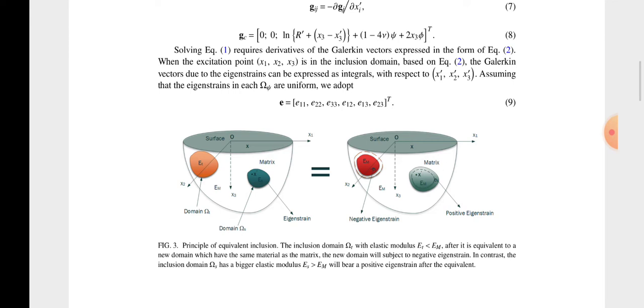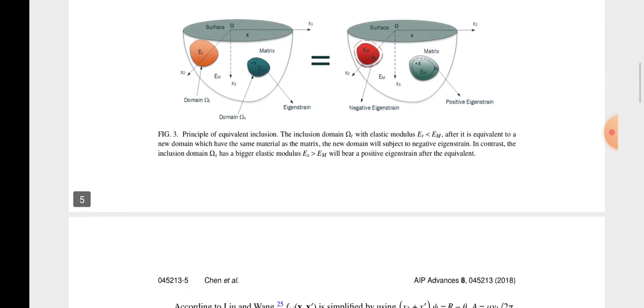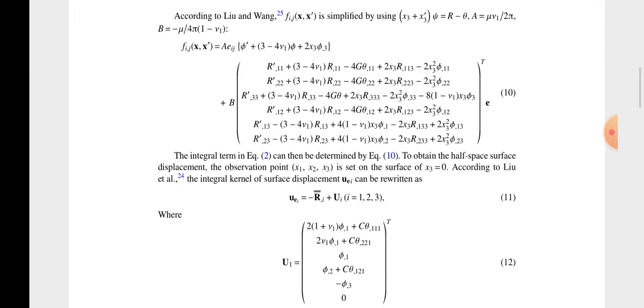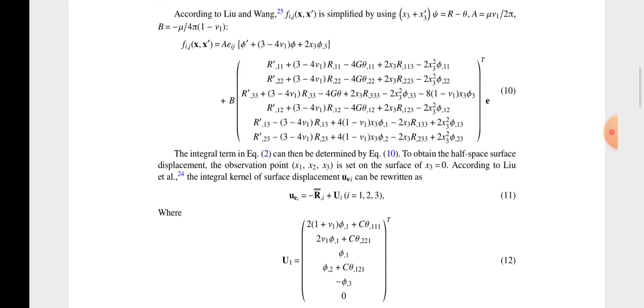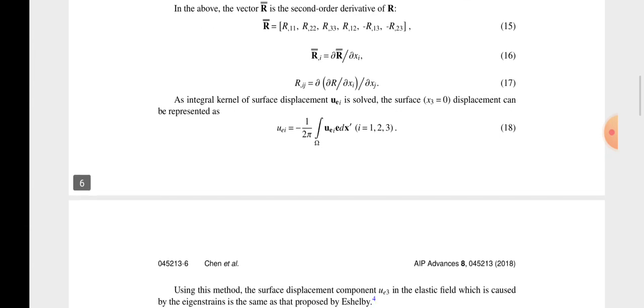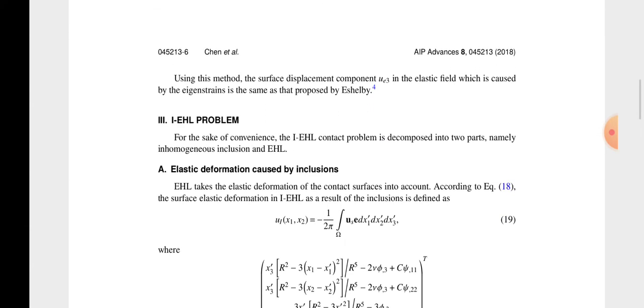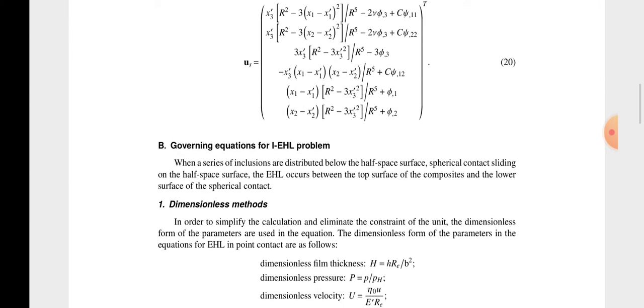With elastic modulus Et is less than Em, and after it is equivalent to the new domain which is called the same as a material as a matrix. The new domain with contrast. Now this is the matrices that we got some depletion in different directions. Inclusion there also given.